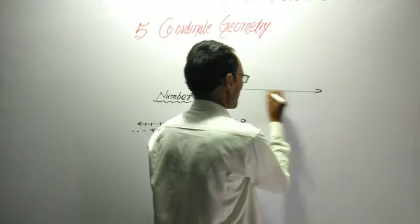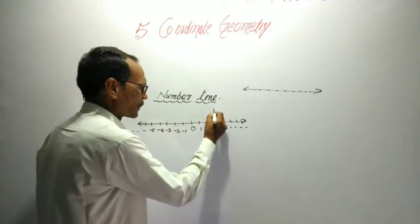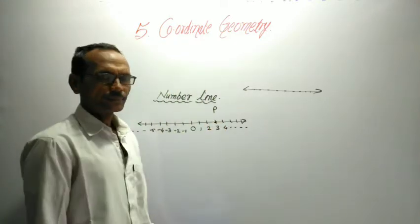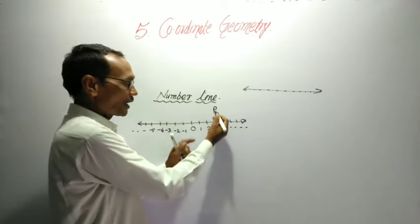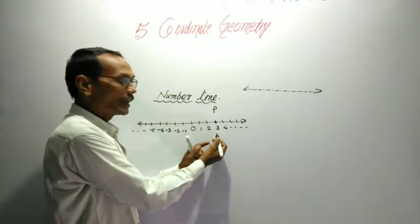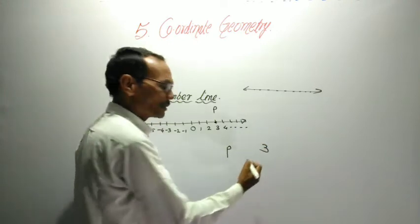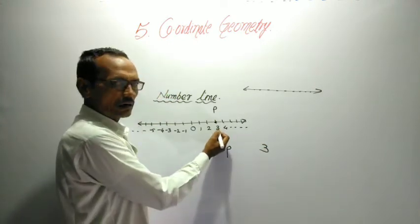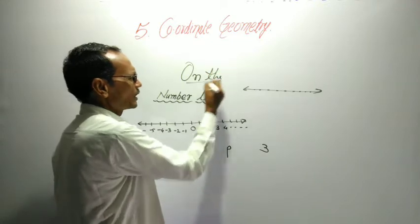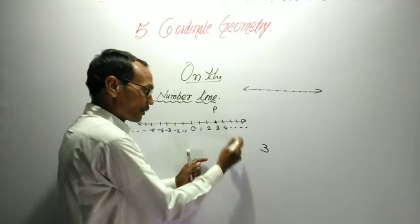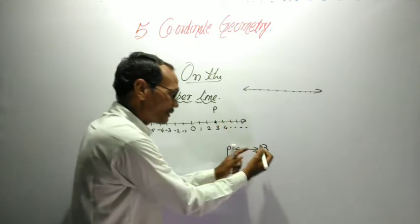Now, a line is a set of infinite points. So I can take a point P here. One can say that P is correlated with, associated with a real number, and that is the 3. So there is a 1 to 1 correspondence between the real number and a point on the number line.